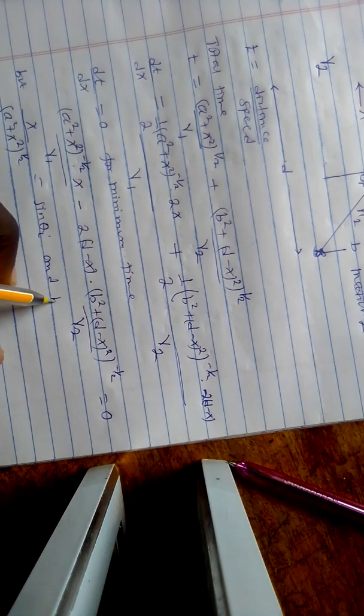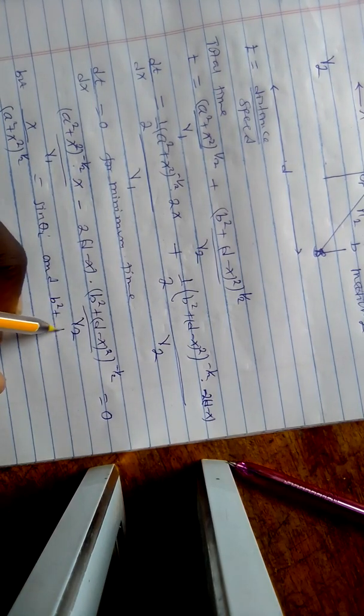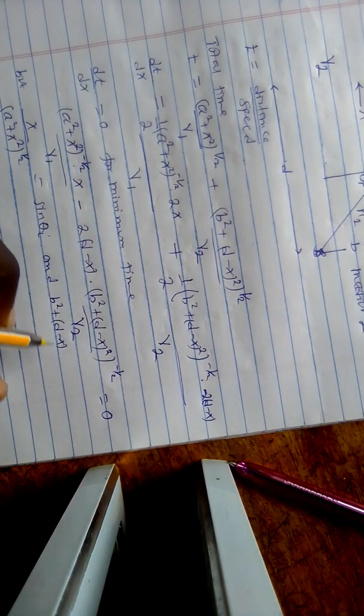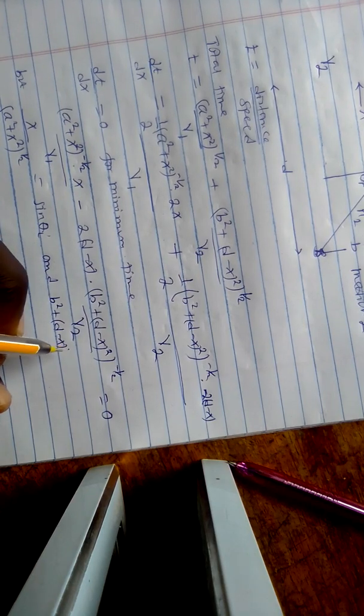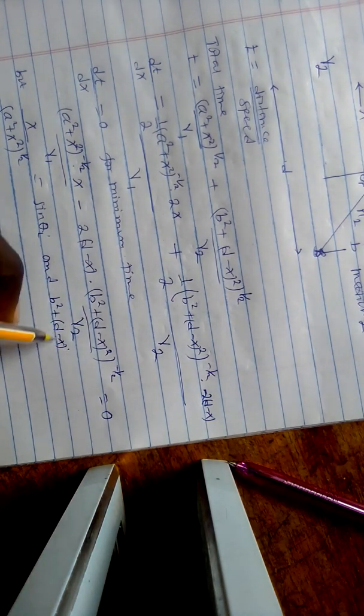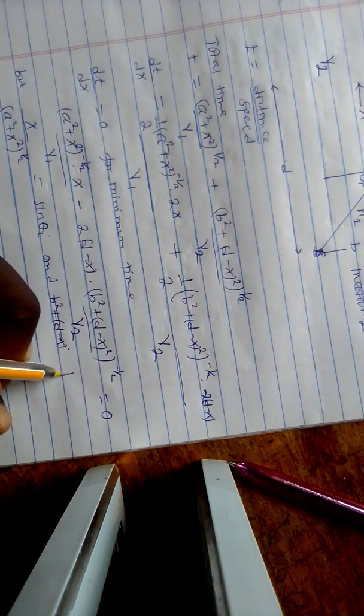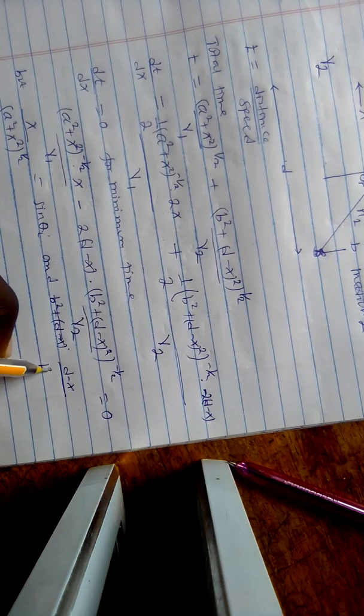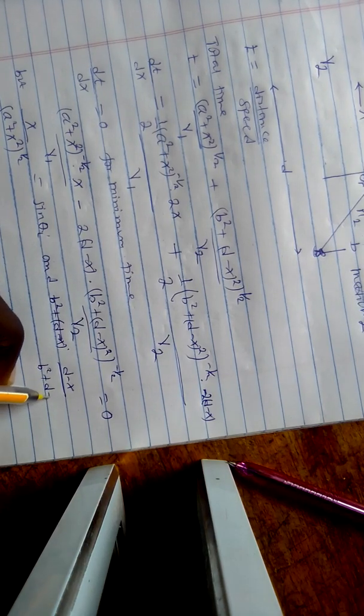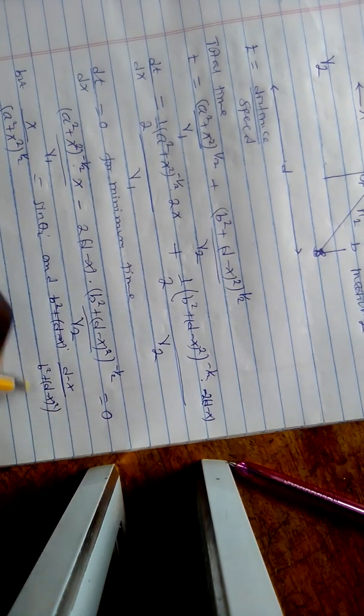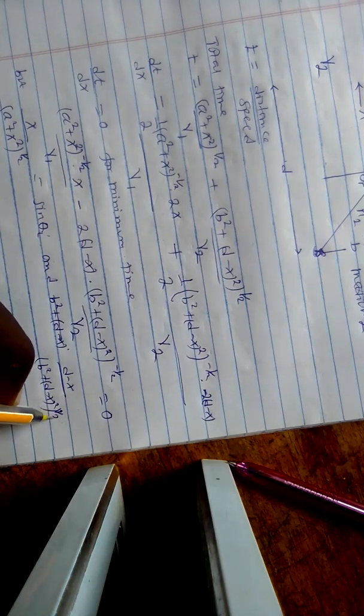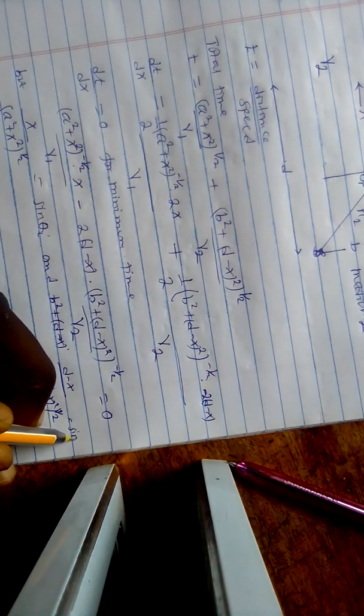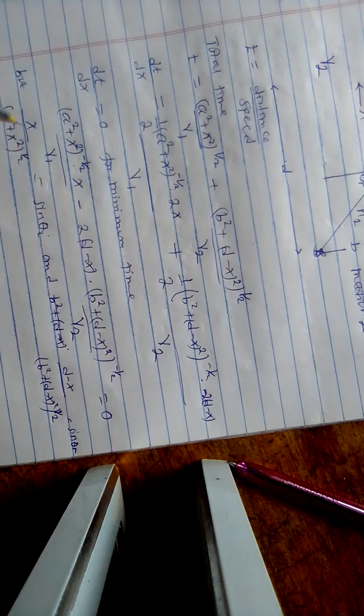And also (D minus X) divided by the square root of B squared plus (D minus X) squared is equal to sin theta r. So we substitute these here.